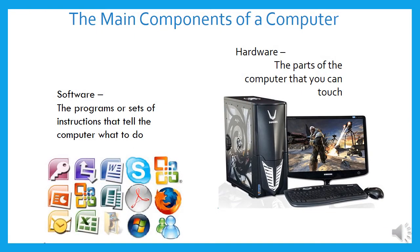Computers have two main components. The hardware, which are the parts of the computer that you can touch, and then the software. These are programs or sets of instructions that tell the computer what to do. You can't touch these, but they definitely do something very useful for you.